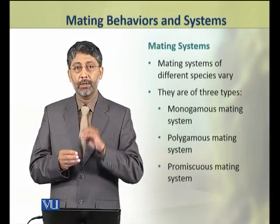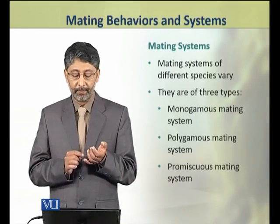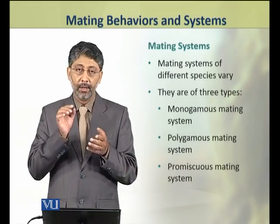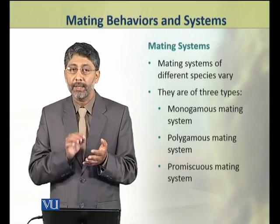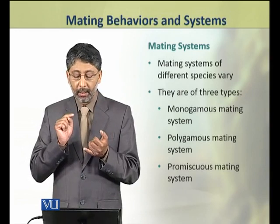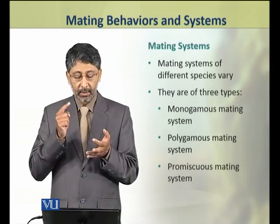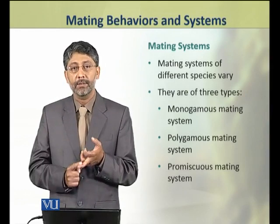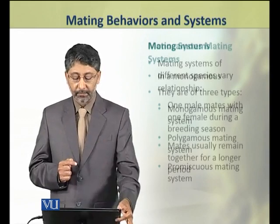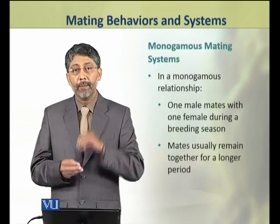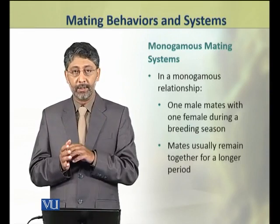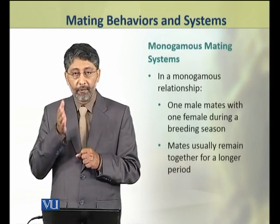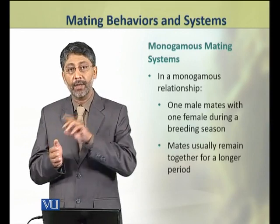Now we shall discuss the mating systems. Mating systems of different species vary. Overall, there are three types of mating systems: monogamous mating system, polygamous mating system, and promiscuous mating system. The monogamous mating system involves an exclusive relationship of one male which mates with a single female during a breeding season.